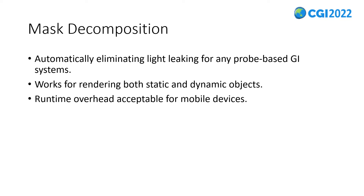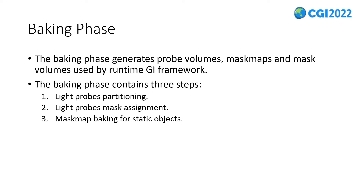This drives us to investigate a new approach that eliminates light leaking automatically without needing to place bounding boxes, and also does not bring too much rendering overhead so it can be used on mobile devices. With these goals in mind, we present the mask decomposition framework, which can eliminate light leaking for any probe-based GI system. The framework requires baking additional data during the baking phase, which is then used to shade global illumination at runtime. The baking phase contains three steps.